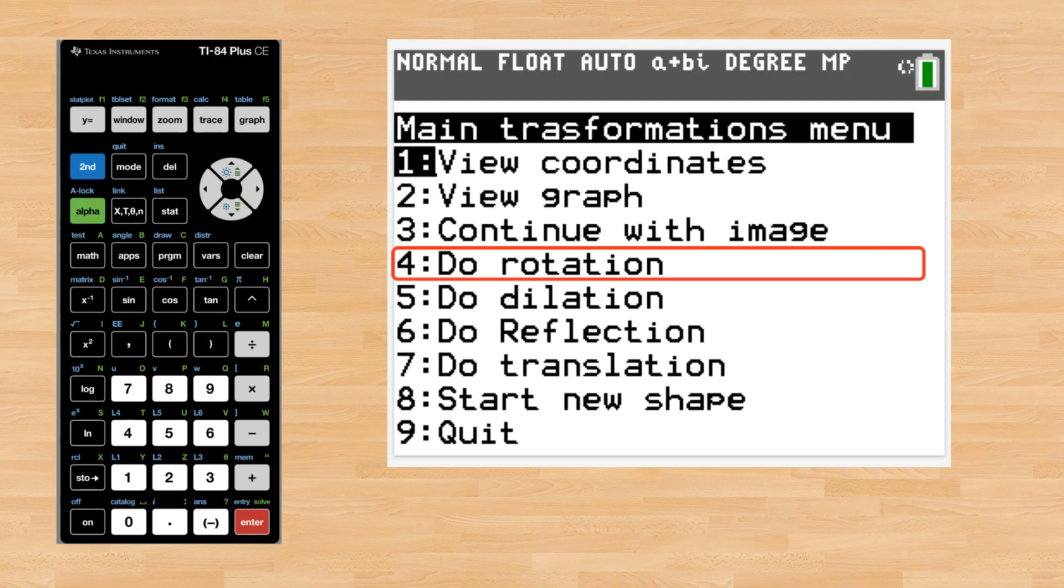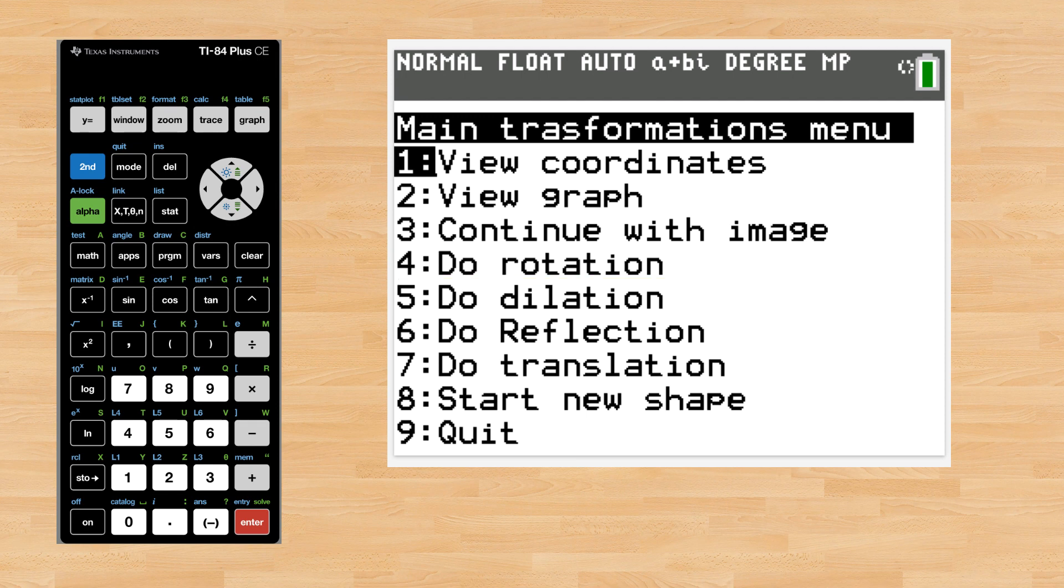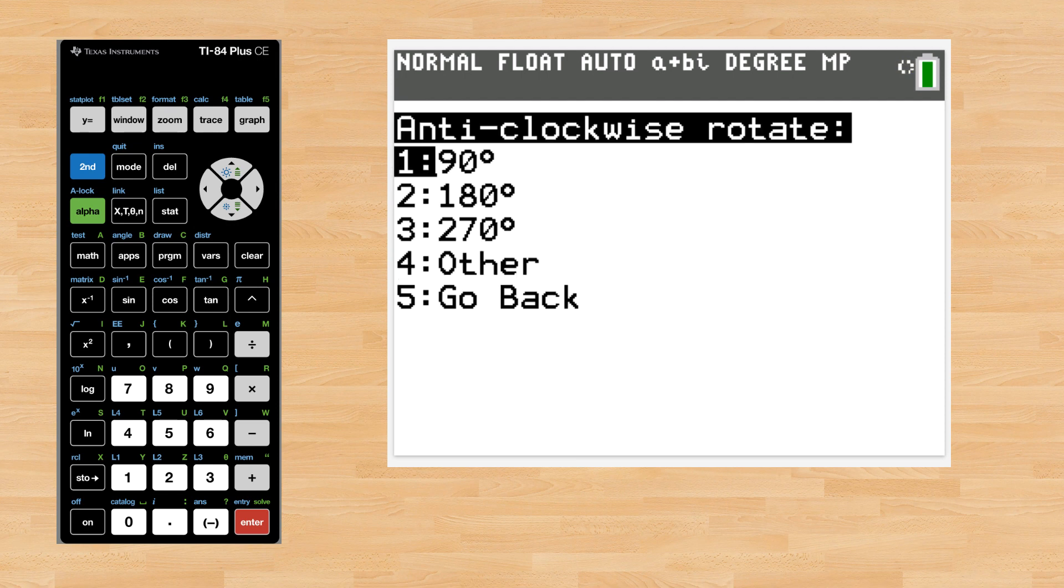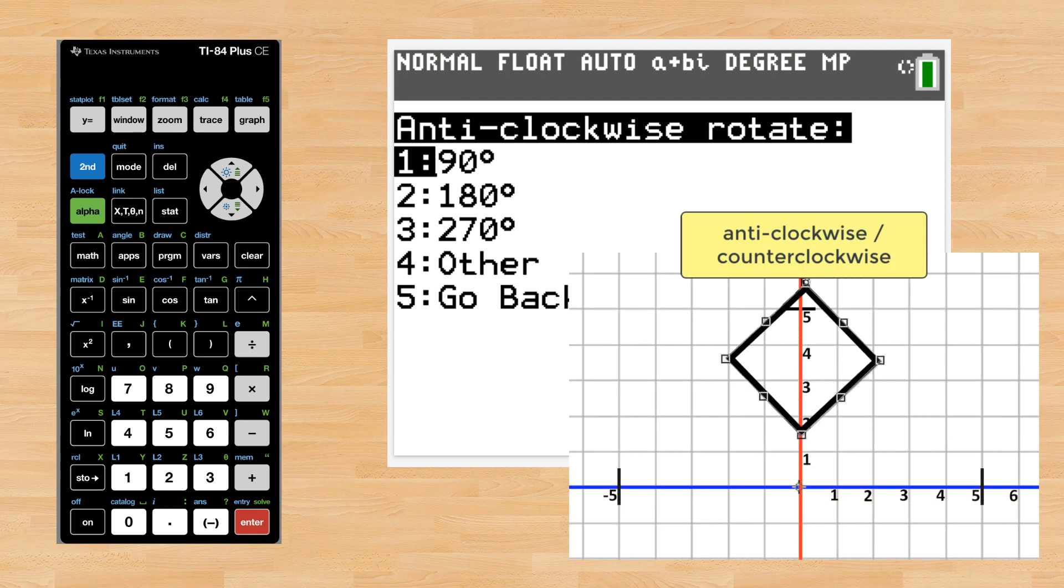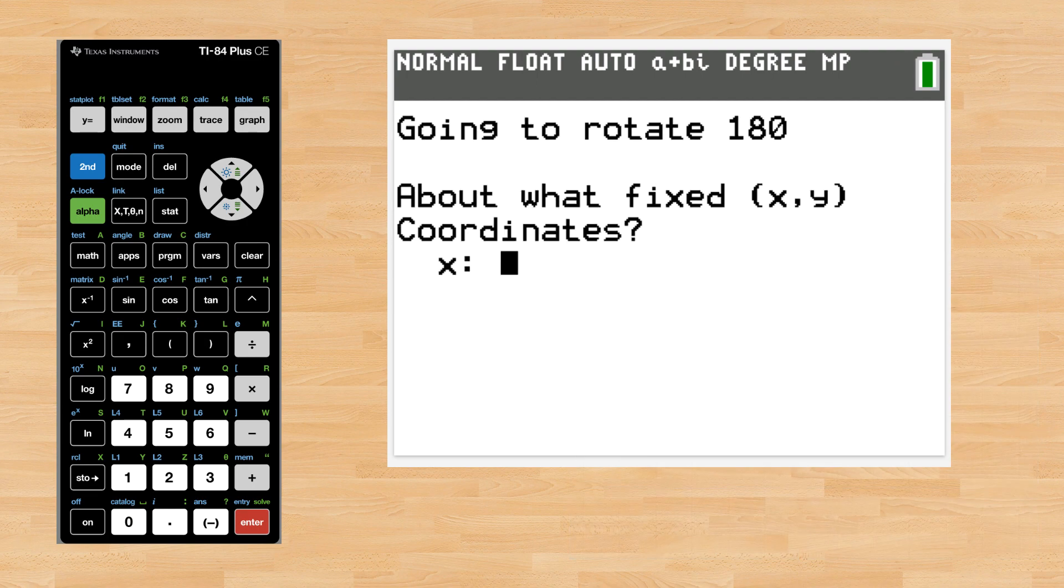To do a rotation choose number four. The next menu lists the common rotations students first learn. All rotations are in an anti-clockwise, also known as counterclockwise, direction. Select the degree of rotation you want to perform and then select the XY coordinate of the center of rotation. In this example let's use zero zero.